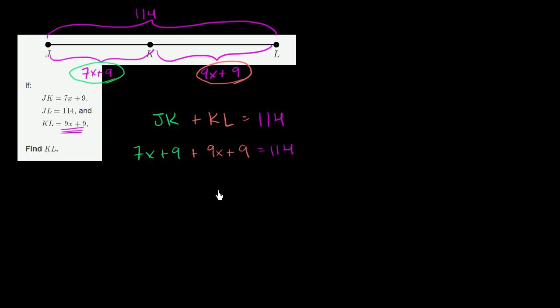And now we just have to break out a little bit of our algebraic skills. So the first thing we might want to do is, we have two terms that have x's in them. If I have 7 x's and I add that to another 9 x's, that means I'm going to have 16 x's. 16x. And then if I have 9 and I add it to another 9, that's going to give me 18. And that's going to be equal to 114.